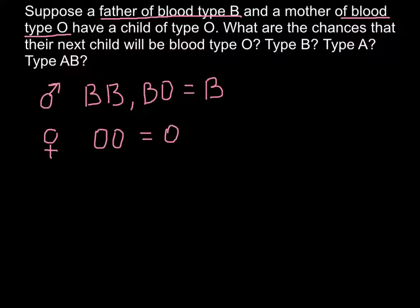When we have, for example, BO, B would be dominant over the O, so it would make blood group B.